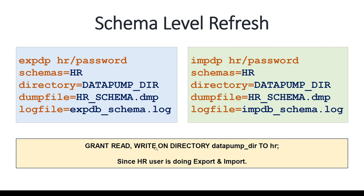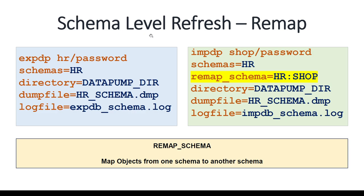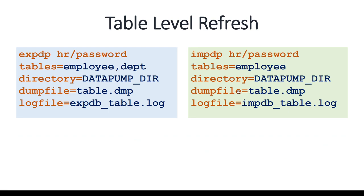The REMAP_SCHEMA parameter allows you to map objects from one schema to another during import. For example, if you export schema HR and want to import it into a schema called SHOP, you use REMAP_SCHEMA=HR:SHOP. All objects within HR will be transferred under the SHOP schema in the target database. For table-level export, the parameter changes to TABLES=HR.EMPLOYEES,HR.DEPARTMENTS.